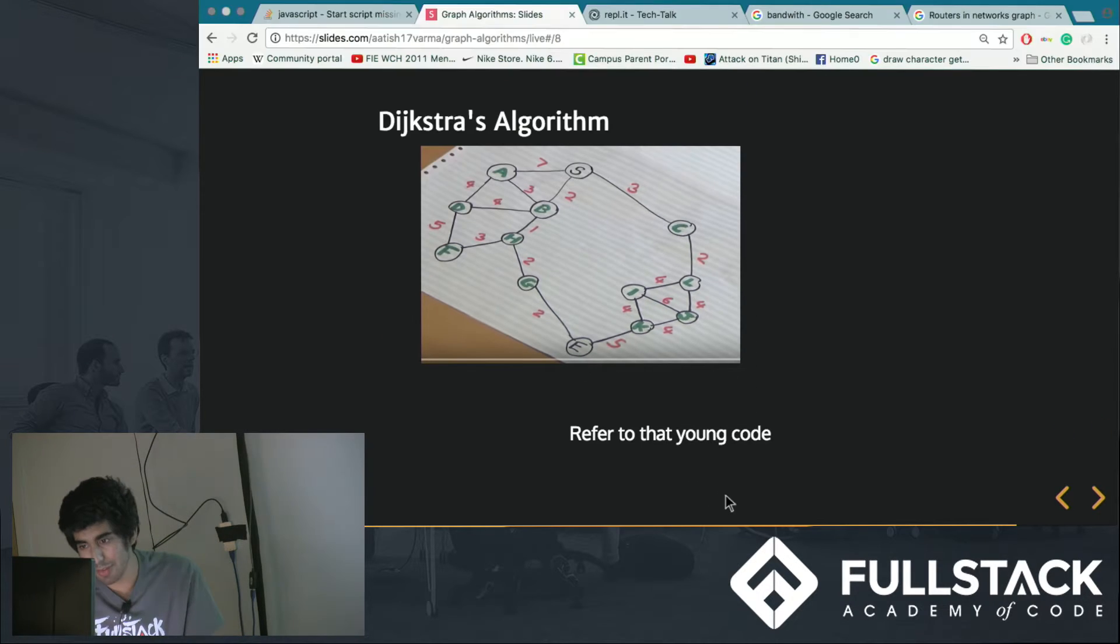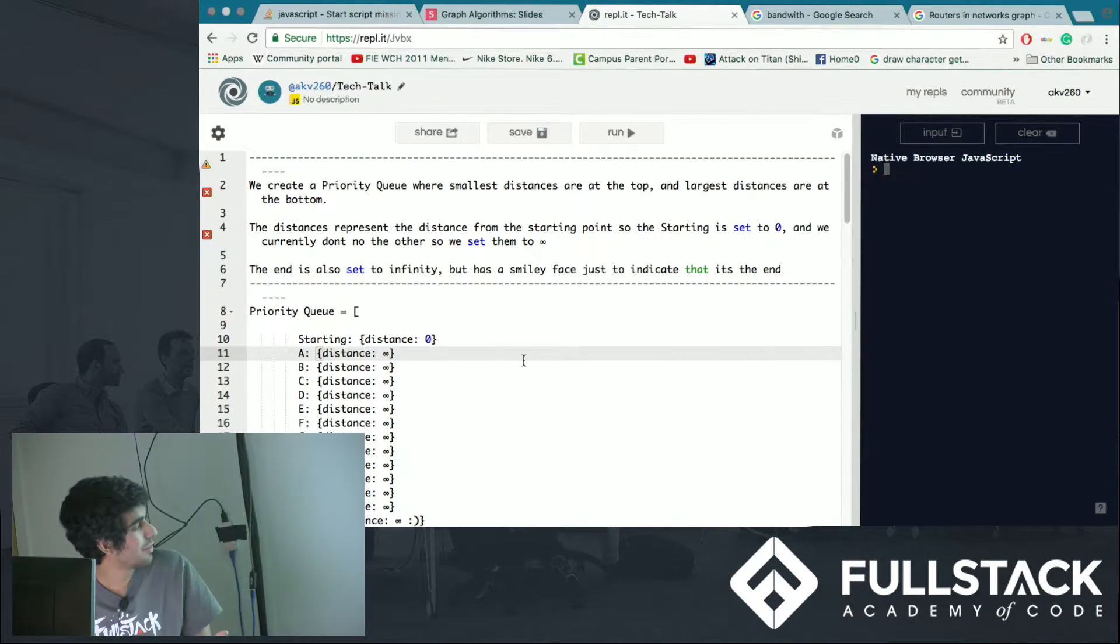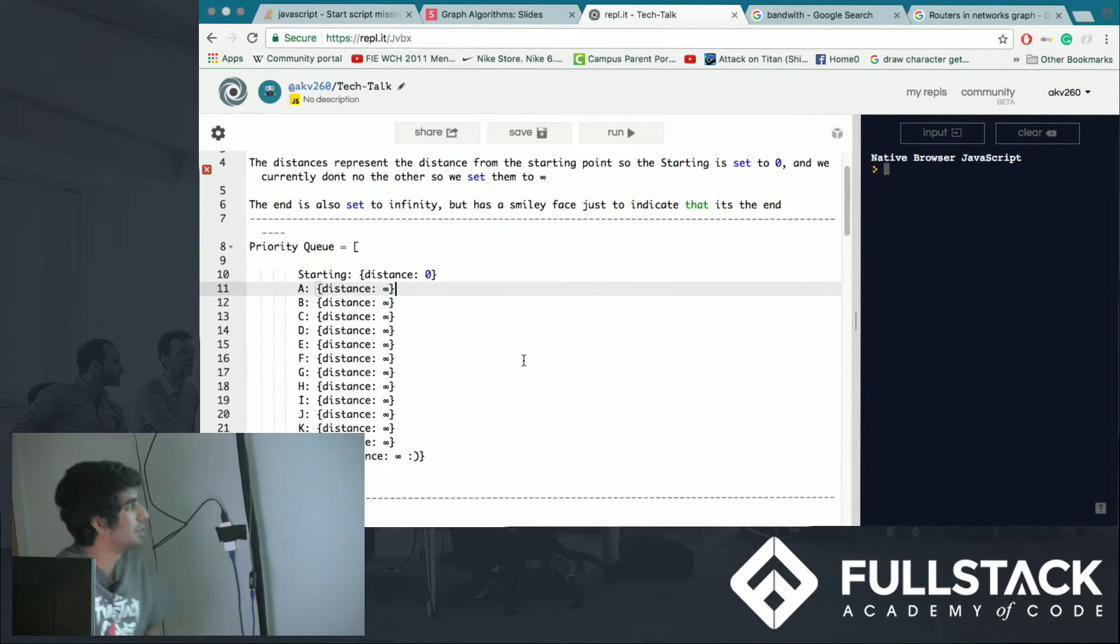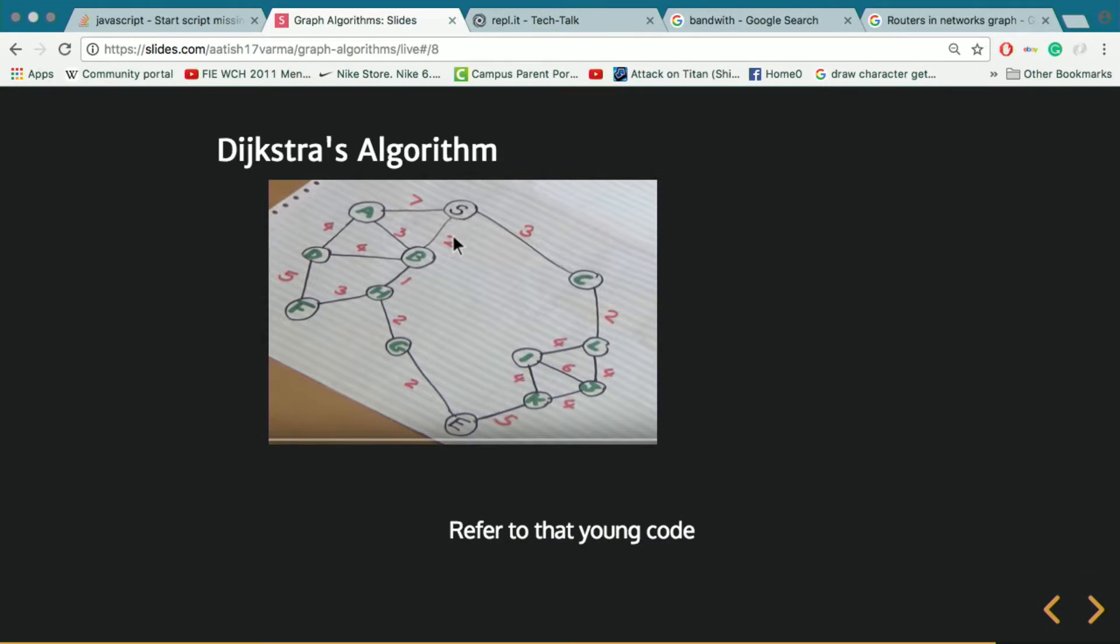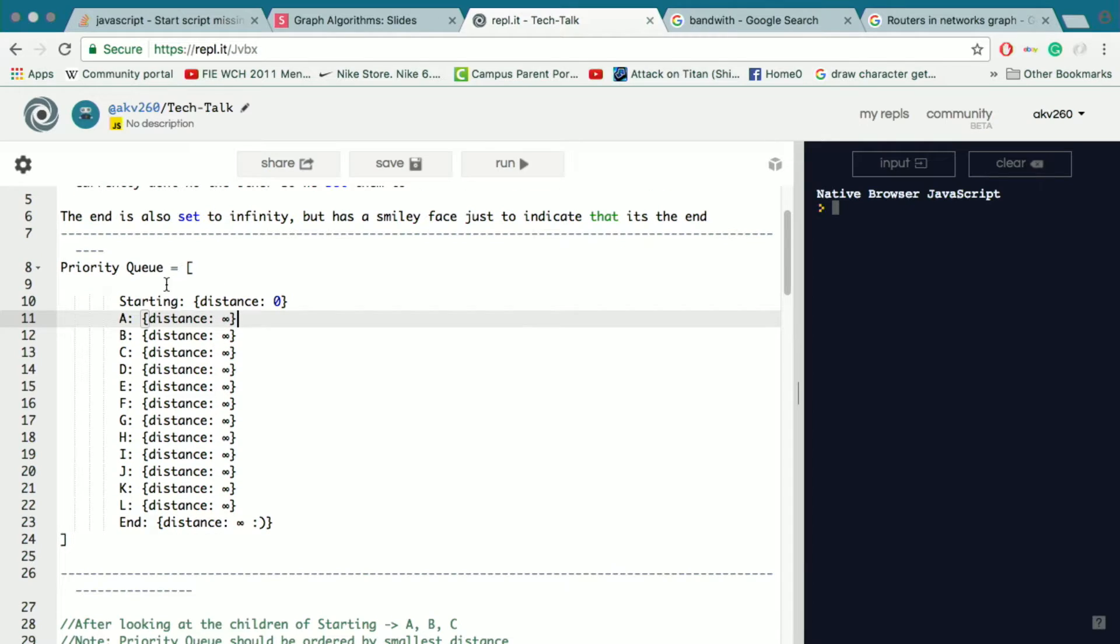So I have a visualization I can show you. So if we refer to this example, our starting node is here and our ending node is here. And we want to find the shortest path from S to E. So these are all the nodes. We have our starting node and we have our end node.